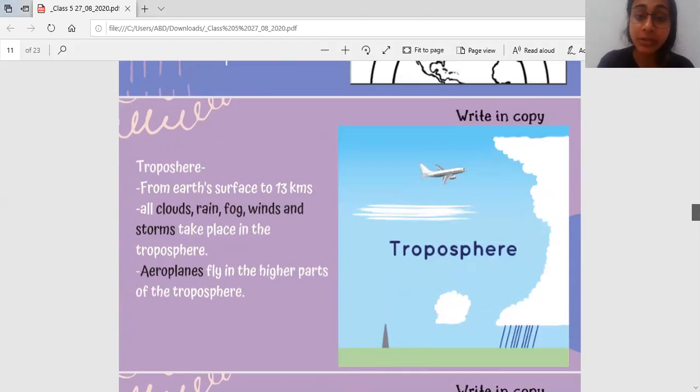Now, first let's begin with Troposphere. What is the Troposphere? It is the first layer. It is from the Earth's surface to 13 km. We call it Troposphere. And what is in that layer? All the clouds, rain, fog, winds, storm. All the things in Troposphere. All the airplanes fly in the higher parts of the Troposphere. And then, towards the end or towards the top is where airplanes fly.